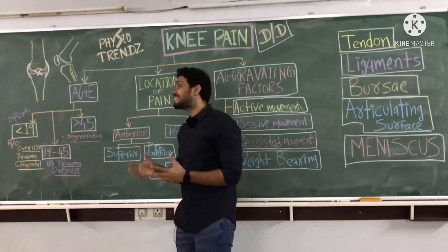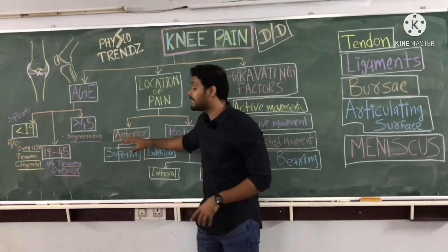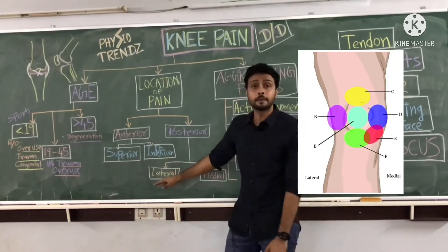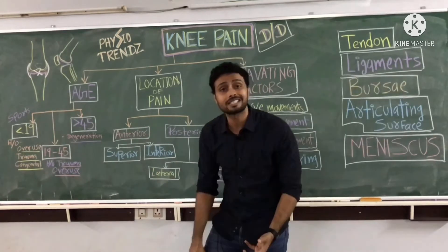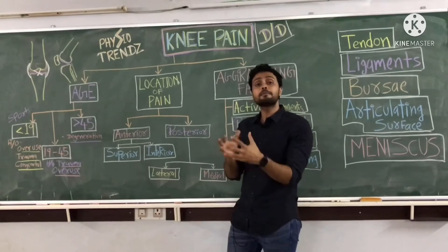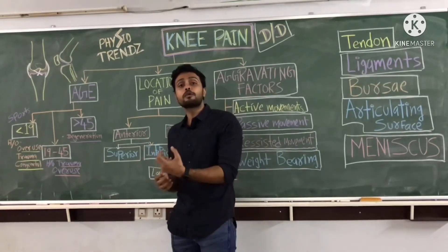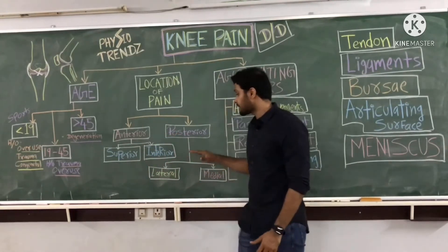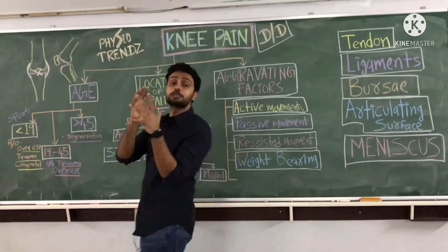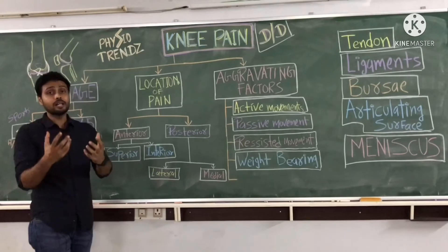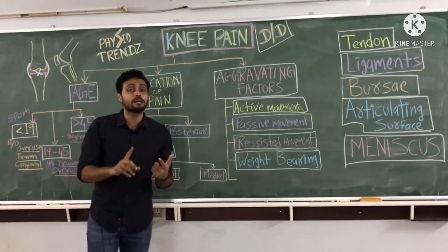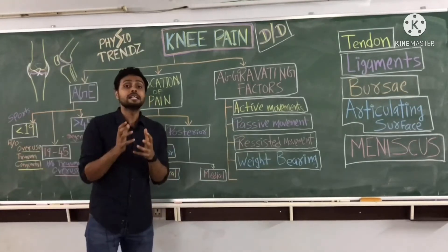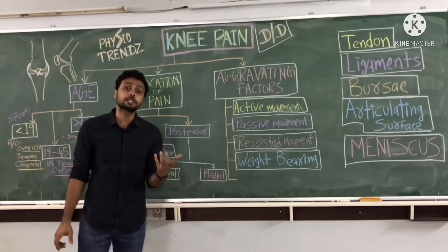The next factor we can utilize is location of the pain. Pain can be on the anterior or posterior side. On the anterior side, it can be anterior superior — where quadriceps fibers are more involved — or anterior inferior, where ligaments or the patellar tendon may be involved. If pain is on the posterior side, it can be posterolateral or posteromedial. Posterior pain may involve hamstring muscles or ligaments like the ACL, PCL, LCL, or MCL. Meniscus injury can also sometimes present as pain at the back of the knee.